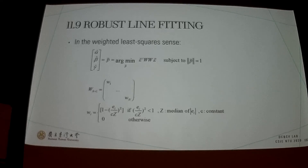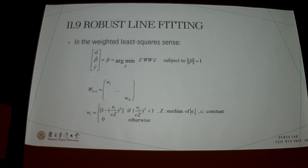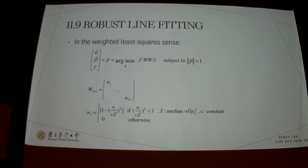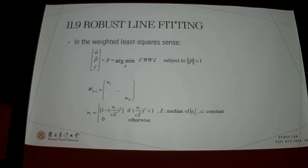In the weighted least-square sense, it is the same as before subject to a constraint, but here there is a weighted parameter. Each weighted parameter has this condition: if the condition is satisfied, it takes this value; if it does not achieve the condition, it gives a zero score for that parameter. This is the robust line fitting in the weighted sense.